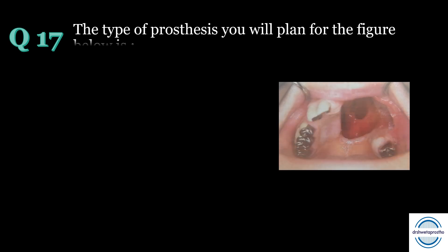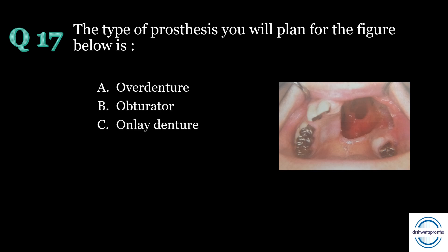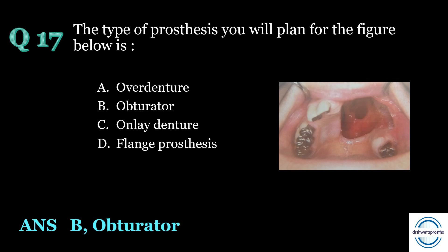Question number seventeen: the type of prosthesis you will plan for the figure below is — A. Overdenture, B. Obturator, C. Only denture, D. Flange prosthesis. The answer is B, obturator. Looking at the picture, it is a maxillary defect. An obturator is a prosthesis used to close an opening or defect of the maxilla as a result of partial or total removal of the maxilla.